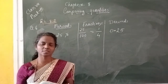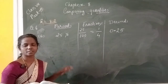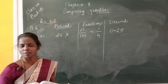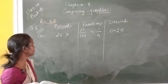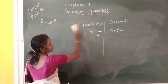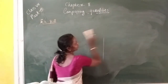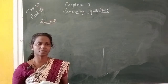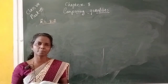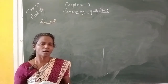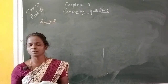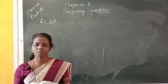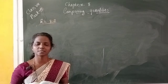Next, question number 7. In a city, 30% are female, 40% are males, and the remaining are children. What percentage are children? Let us read the question one more time: in a city, 30% out of 100 people are female, 40% are males, and the remaining are children. What percentage are children?